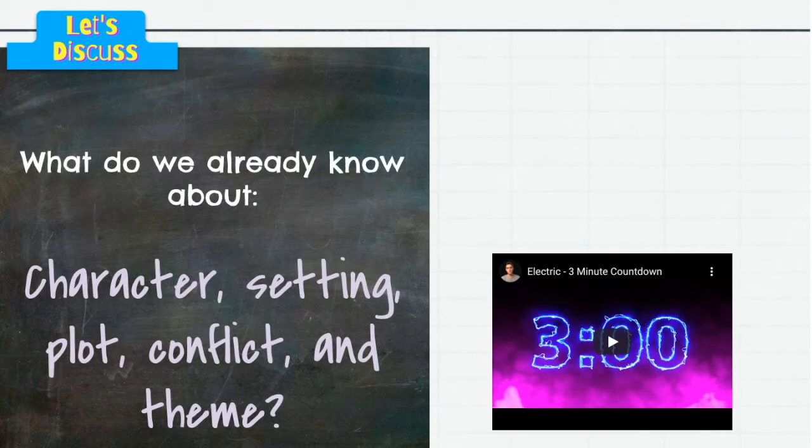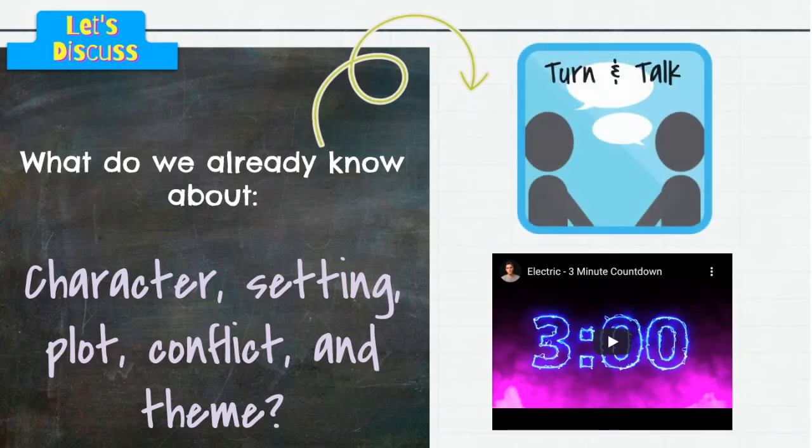Before we get started, I want you to write down what you already know about character, setting, plot, conflict, and theme. Take about three minutes. If you have someone around you, you can turn and talk to them, or if you're alone, just pause this video and you can jot it down. Go ahead and pause the video and write down what you already know about these story elements.